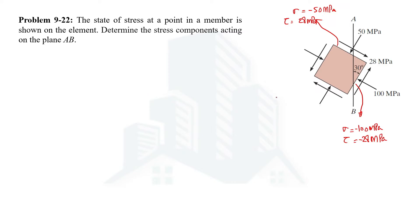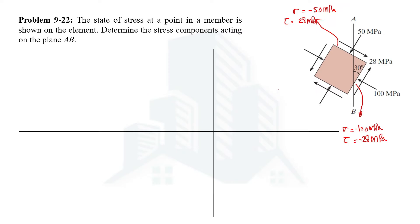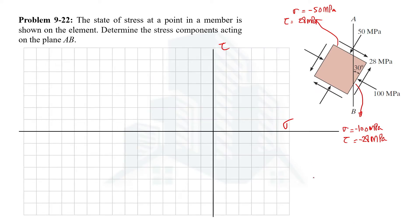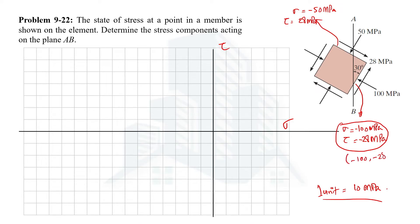In Mohr's circle, the horizontal axis represents normal stress and the vertical axis represents shear stress. We draw a grid where one unit equals 10 MPa. On this grid we will have two points: one at minus 100 and minus 28, and the other at minus 50 and plus 28.